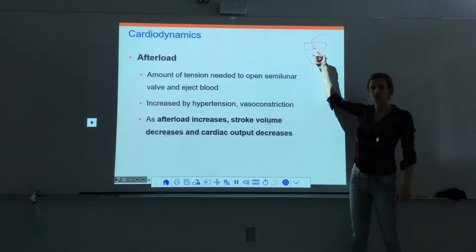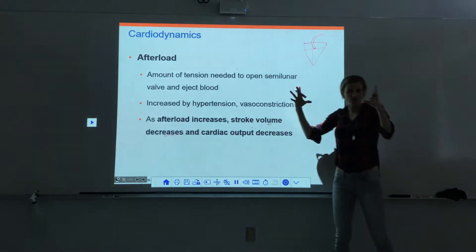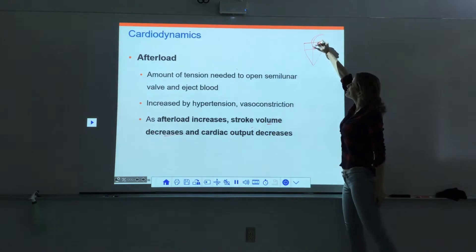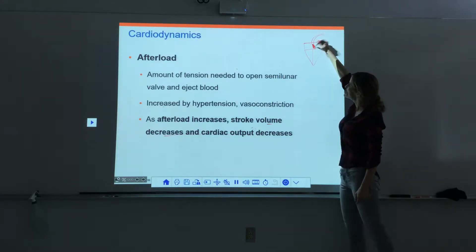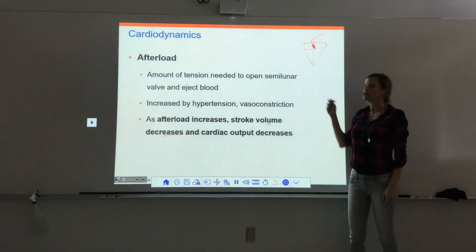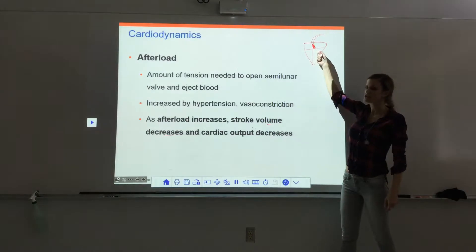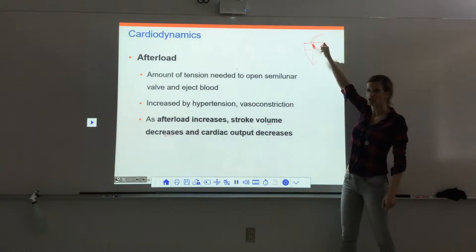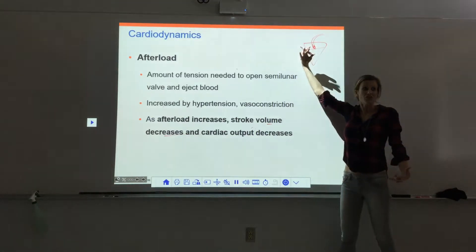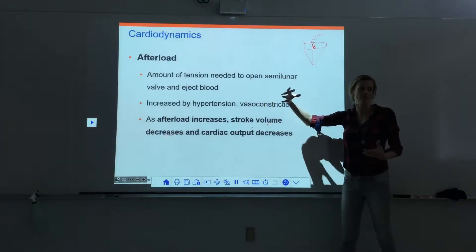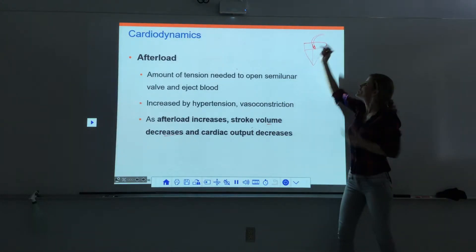At the very beginning of ventricular systole, the ventricle starts to contract and generates pressure, but there is already pressure in the vessel — essentially blood pressure. The pressure of the blood in the vessel is pushing down on that valve, so the ventricle has to create enough force to overcome that pressure in order to push open the valve and eject blood. That force required is the afterload.